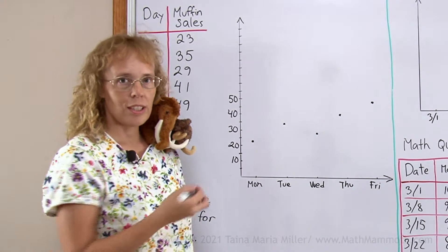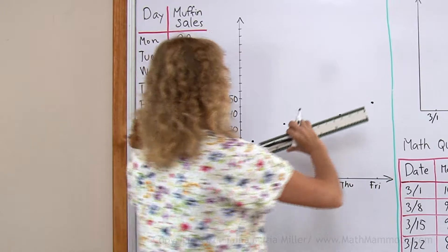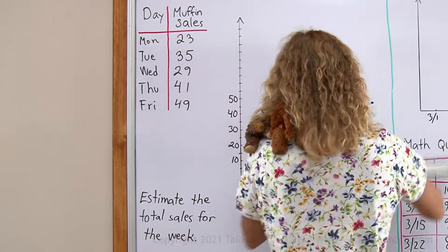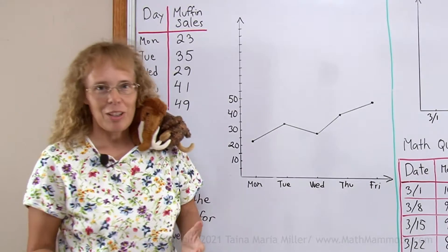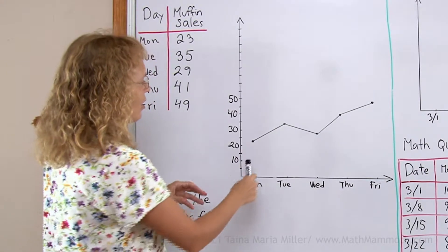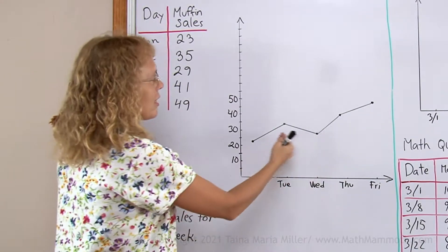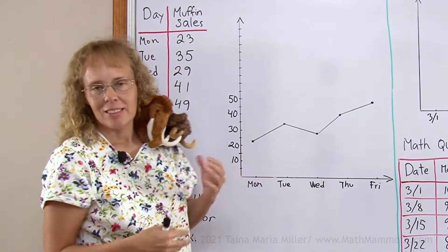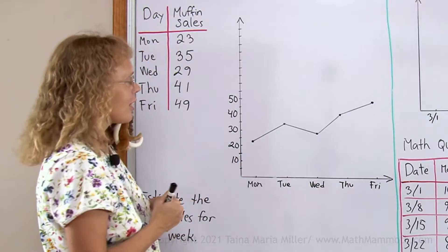The last thing to do now is to join these dots with line segments. Okay, now the line graph is ready. And we can see that looks like the sales tended to increase over the week. Maybe they advertised it more or something, but it seems like sales increased.